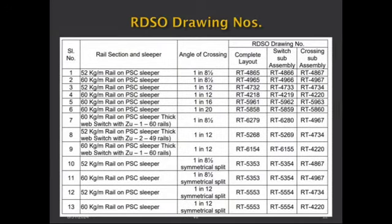Some drawing numbers of the points and crossings for different rail sections and turnout numbers are given for reference: for 50KG and 60KG rails with 1-in-8.5, 1-in-12, and 1-in-16 and 1-in-20 turnouts, and also for the thick web switch. The symmetrical split information and details will be covered in upcoming videos.